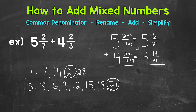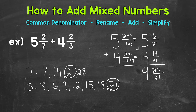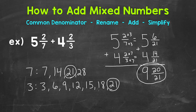Now that we have a common denominator between our fractions, we're able to add. Let's add fractions first, then whole numbers. For the fractions, add the numerators: 6 plus 14 is 20, and we keep the denominator of 21. So 6 twenty-firsts plus 14 twenty-firsts equals 20 twenty-firsts. For the whole numbers: 5 plus 4 is 9. Our final answer is 9 and 20 twenty-firsts. Always check to see if you can simplify — 20 twenty-firsts is in simplest form, since the only common factor between 20 and 21 is 1.